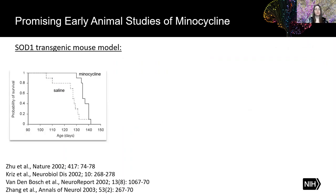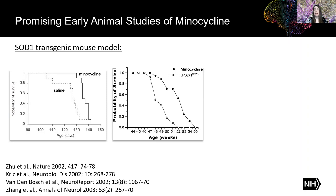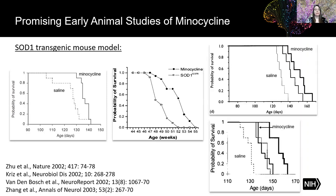In the early 2000s, the antibiotic minocycline showed promise as a potential treatment. It improved survival and motor symptoms in a mouse model of ALS — the SOD1 transgenic mouse model. You can see that minocycline improved survival by the rightward shift in the survival curve shown here. And this result was seen again and again — pretty reproducible.